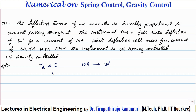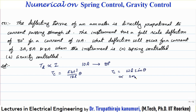Before proceeding, let us review the controlling torque. For spring control, the controlling torque Tc equals EBT³ divided by 12L times theta — so Tc is proportional to theta. For gravity control, Tc equals W times L times sin theta — so Tc is proportional to sin theta.